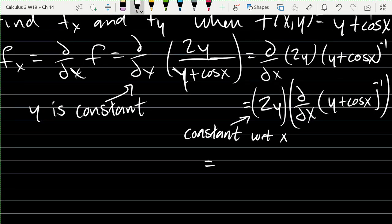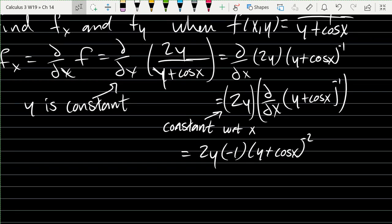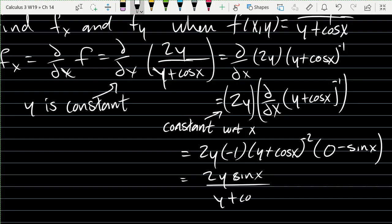Alright, I do need a chain rule here. So I have negative 1 times (Y plus cos X) to the negative 2 power. So that took care of the negative first power. Now when we go inside, what is the X derivative of Y? Zero. So we're taking the X derivative of a constant. Derivative of cosine X is negative sine X. And rewrite this to 2Y sine X divided by (Y plus cos X) squared. So that is the X derivative of F.